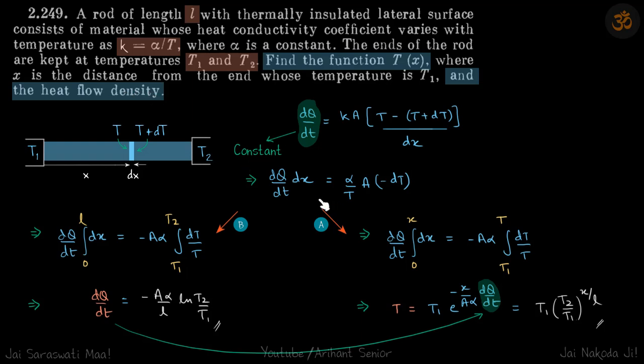For the second part, we need temperature at a distance x, so our limits will be from zero to x, and limits of temperature will be from T1 to T. We do that in the same equation and get this equation. This is temperature as a function of x.